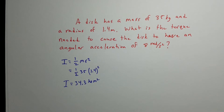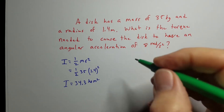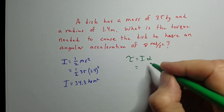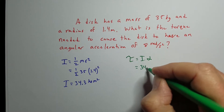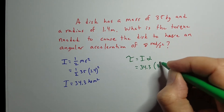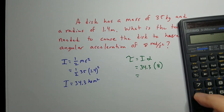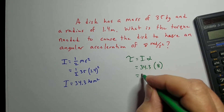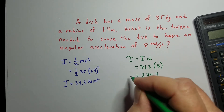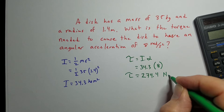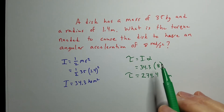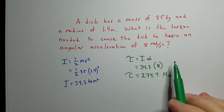We just need to calculate that moment of inertia before we get going. Now we can figure out the torque on the system. We're going to use torque equals I times alpha because it matches what we have. I was 34.3 and alpha is 8 radians per second squared. So 34.3 times 8 gives a torque on this disc of 274.4 newton meters.